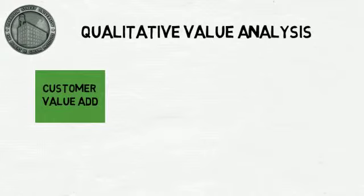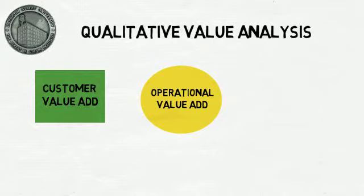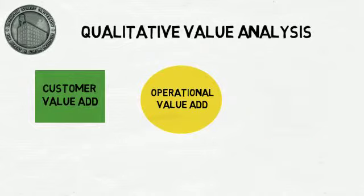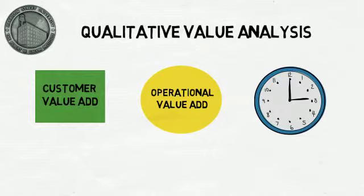After your team has mapped and verified the current process, the next step is to perform a qualitative value analysis. All steps within a process fall into one of three categories: customer value add, operational value add, or non-value add. This is a lean tool helping you to determine which steps in the process truly add value to the customer, so that you can eliminate non-value add steps and make your process more efficient.